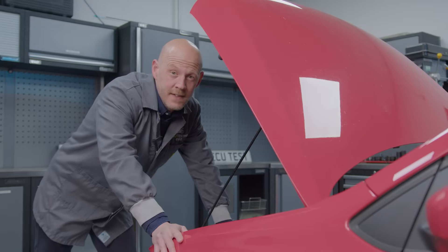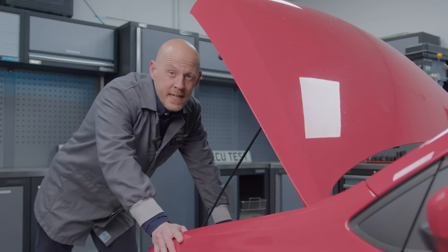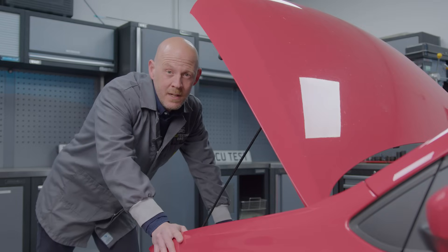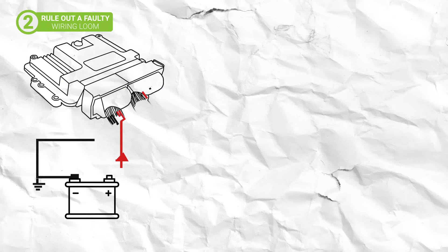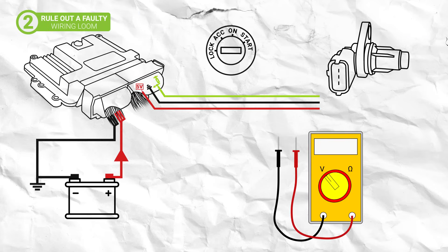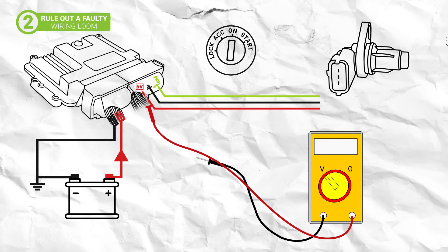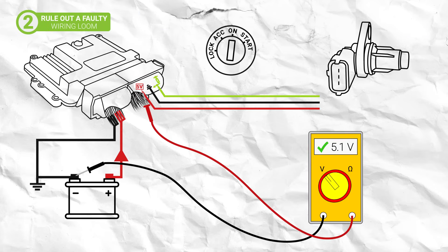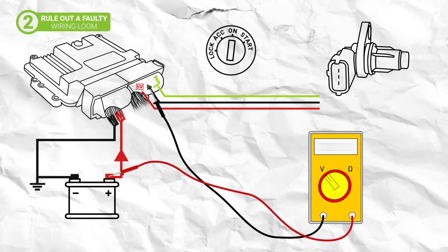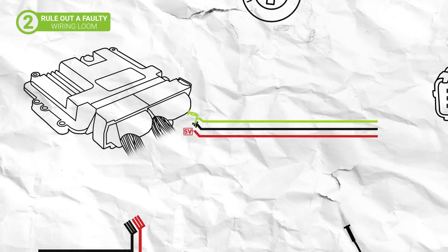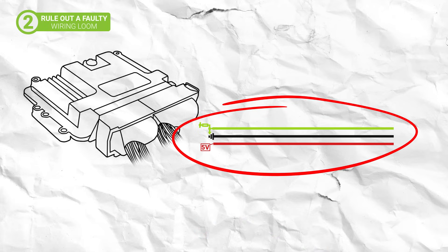To test for a fault in the loom, we need to perform the same tests as before, but at the ECU connector. Again, the 5 volts and signal wires should read 5 volts and the ground should read battery voltage. If these readings are good, then you have a fault within the wiring loom which will need to be repaired.